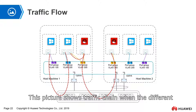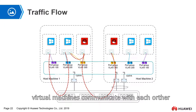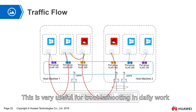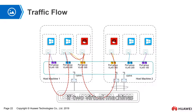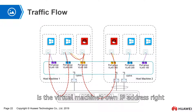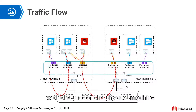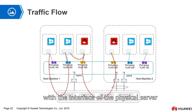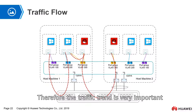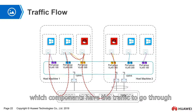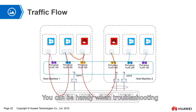This picture shows the traffic trend when different virtual machines communicate with each other. This is very useful for troubleshooting in daily work. For example, if two virtual machines cannot access each other normally, what is the problem? Is the virtual machine's own IP address correct? Is the port group right? Does the traffic go out to the physical network? If it does, is there a problem with the physical machine's port, the uplink, or the interface of the physical server? Therefore, understanding the traffic flow direction is very important — knowing which components the traffic passes through makes troubleshooting much easier.